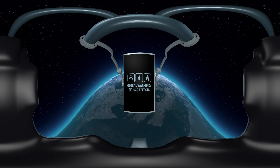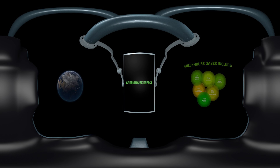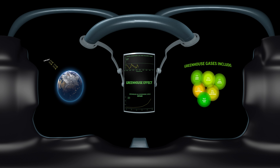Global warming is the unusually rapid increase in global average temperature near the Earth's surface over the past century. This warming trend is caused by escalating concentrations of greenhouse gases in the atmosphere due to human activities such as increased fossil fuel burning. This amplifies the greenhouse effect, an important process in the health of the planet — the effect is when gases in the atmosphere trap heat radiating from the Earth.